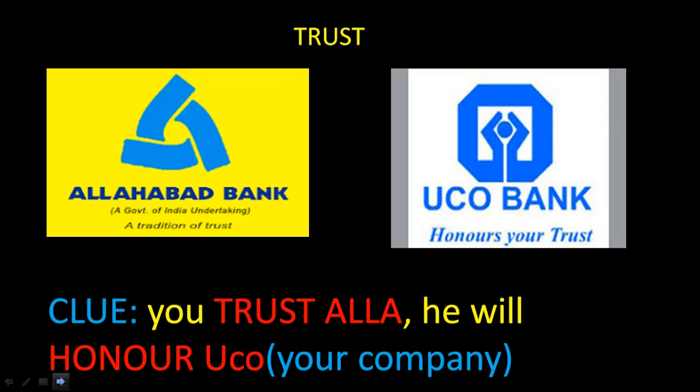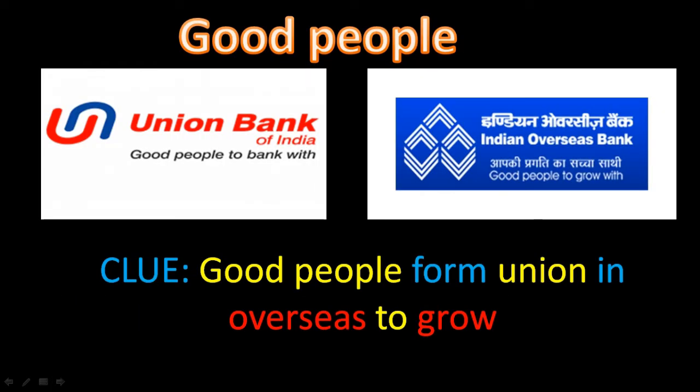Union Bank of India and Indian Overseas Bank both have 'good' in their taglines. The clue is: 'Good people form union in overseas to grow.' Union Bank of India's tagline is 'Good People to Bank Grow.' Indian Overseas Bank's tagline is 'Good People to Grow With.' So: good people form union — Union Bank; overseas to grow — Indian Overseas Bank.